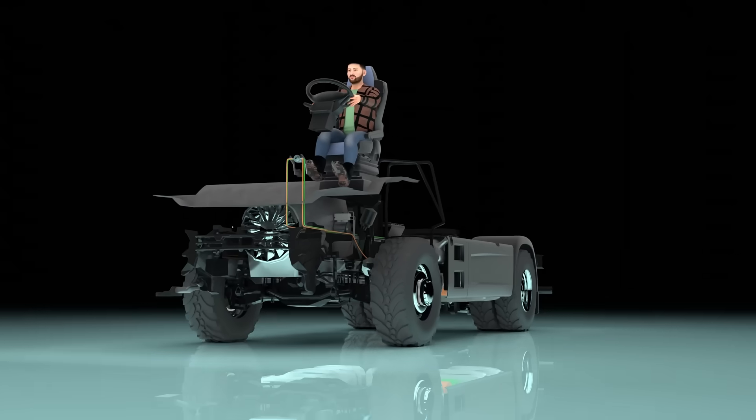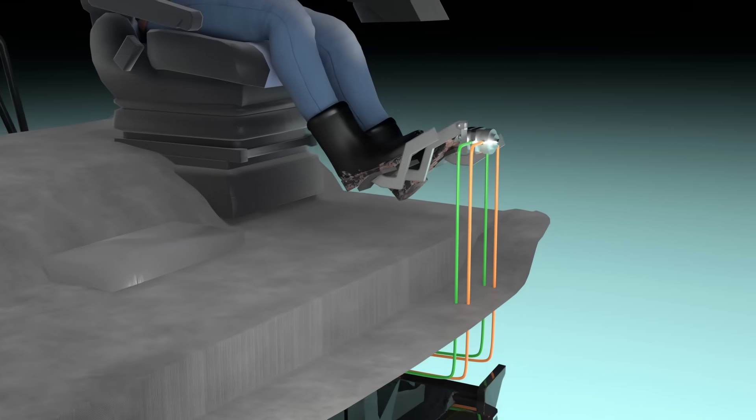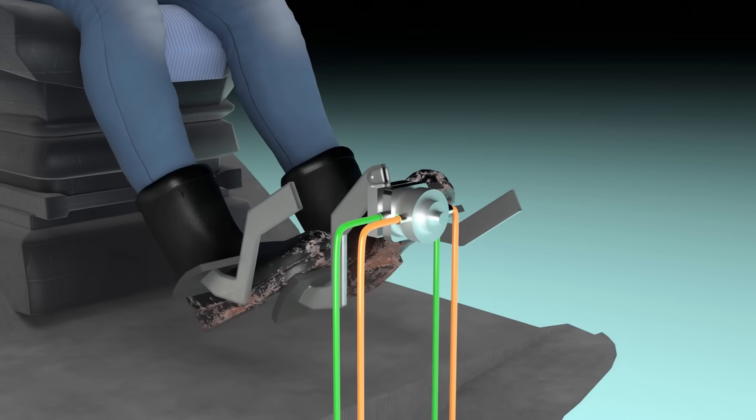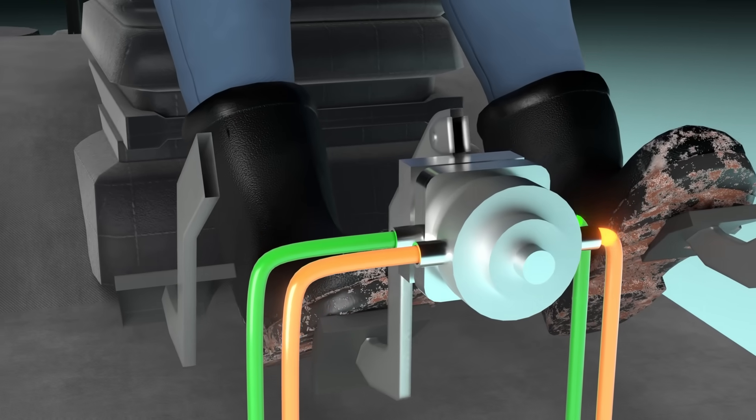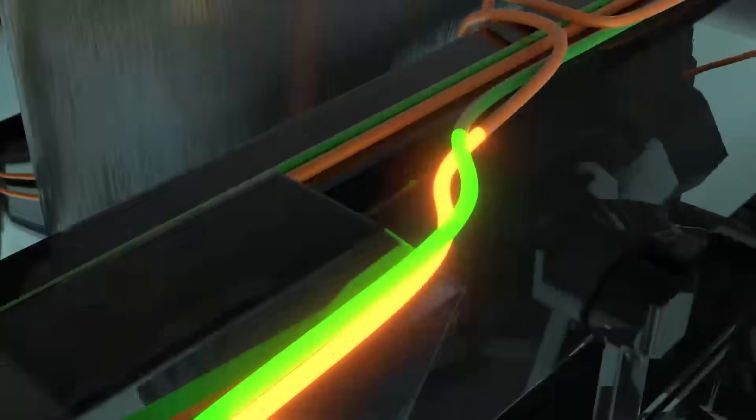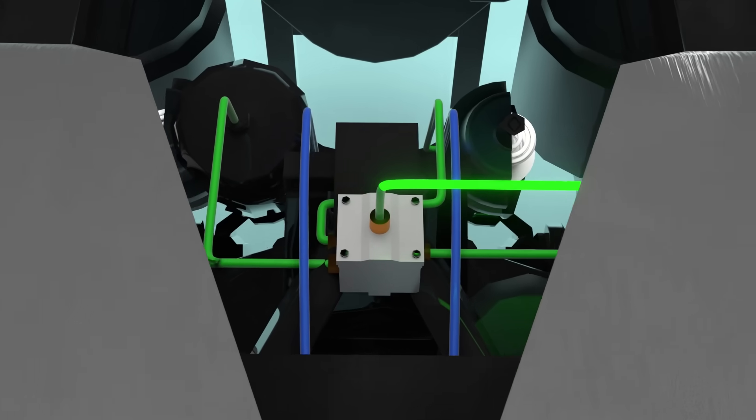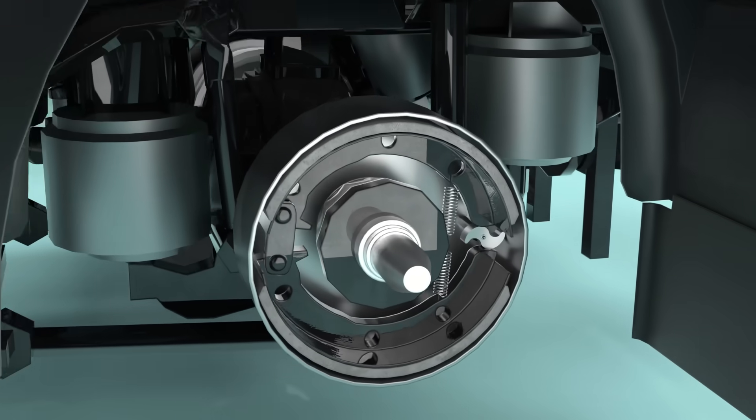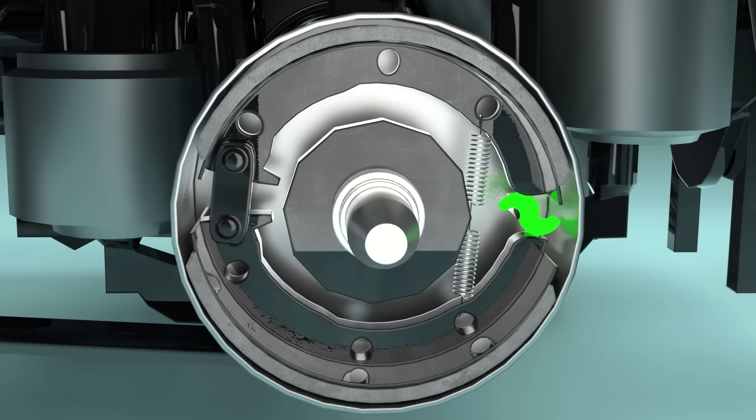When a truck driver steps on the brake pedal, they're not directly stopping the wheels. They're releasing a powerful wave of compressed air, over 100 psi of pressure. That force travels through tanks, valves, and chambers, translating a simple pedal press into thousands of newtons of stopping force. This is the air brake.